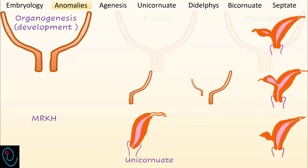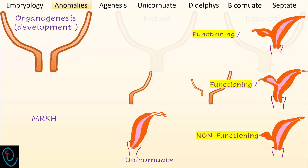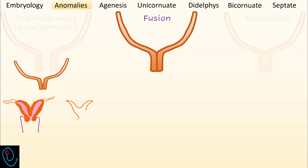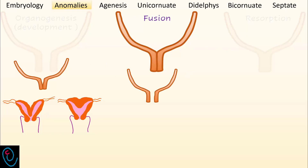The rudimentary horn may be functioning or non-functioning. The functioning rudimentary horn may be non-communicating or communicating. Partial failure of fusion results in a bicornuate uterus, which may be complete or partial, while complete failure of fusion results in a didelphys uterus. Didelphys means twins, where two uterine cavities, two cervical canals, and two vaginal canals are formed.